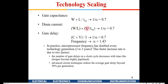For drain current, the ID equation includes W/L, VDD, Cox, and voltage squared terms. After scaling, the drain current reduces by a factor of about 0.7. Gate delay is proportional to C times V divided by I. Although current is reducing, both C and V in the numerator are also reducing, so the frequency increases by 1/0.7, which is approximately 1.43 — meaning you can operate at higher frequencies with each scaling generation.